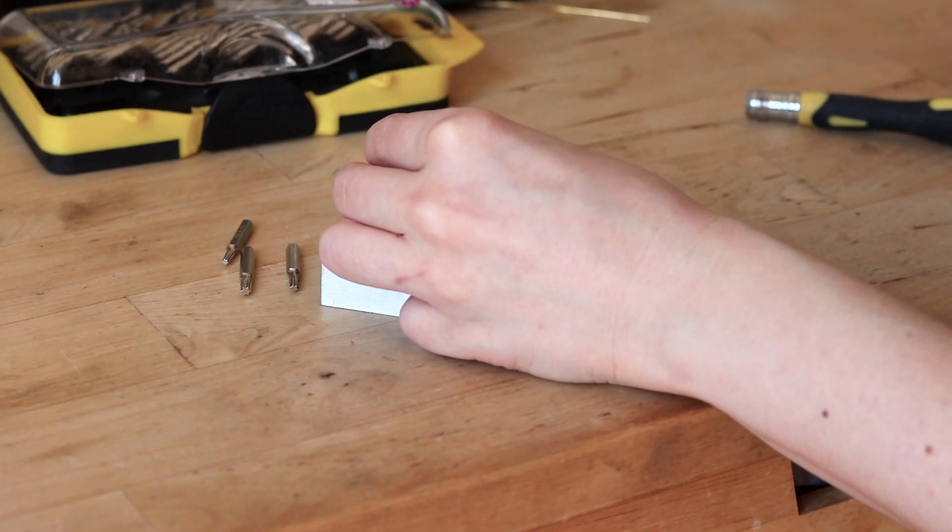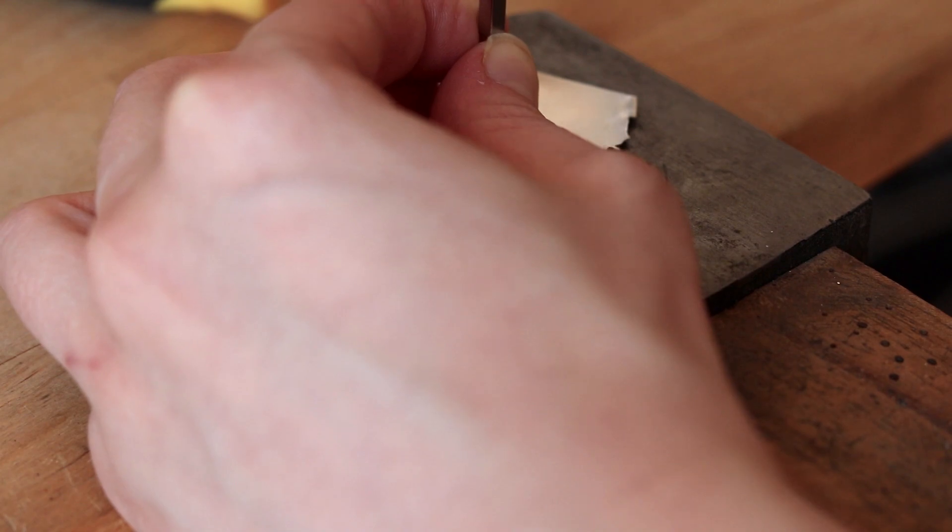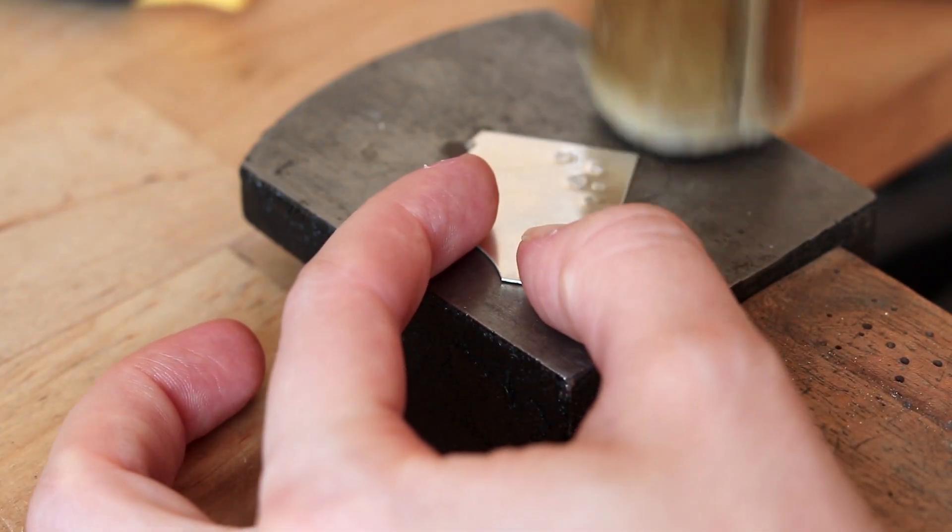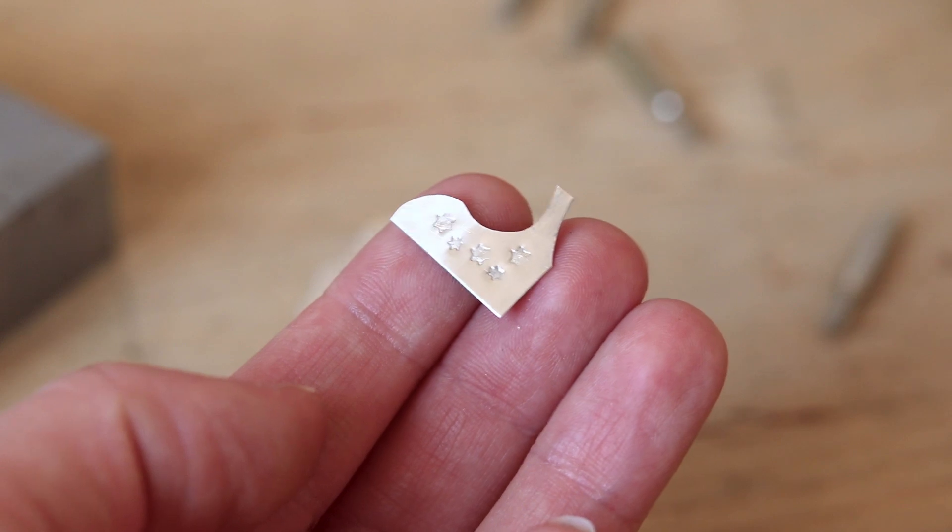Hit in the center and maybe a little bit towards the edges. Metal sheet will bend, so flatten it with a rawhide mallet and there you go.